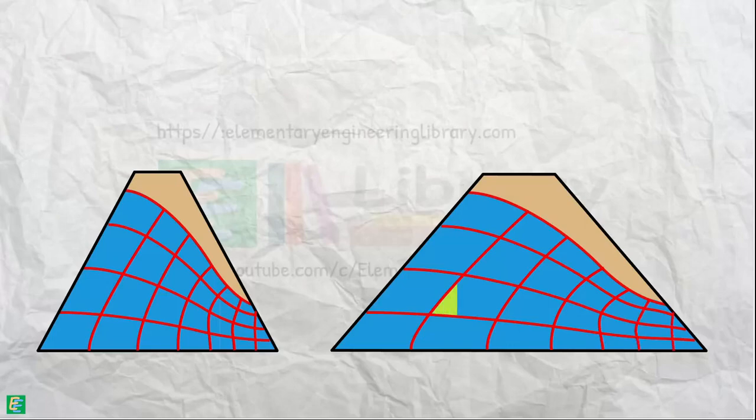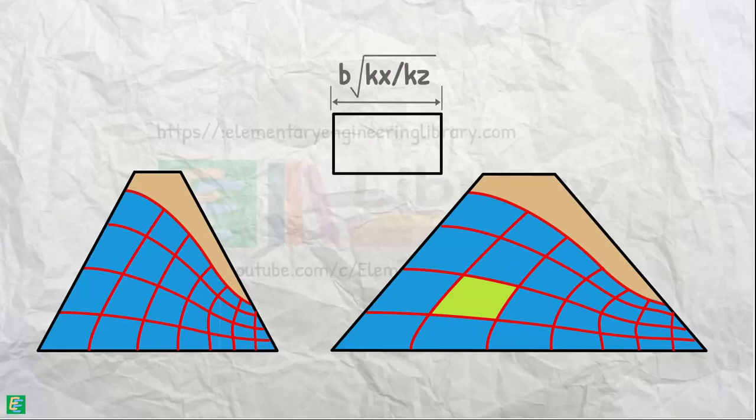On the natural cross-section, the flow net will not be composed of squares because the horizontal dimensions are elongated by the factor square root of kx by kz, nor will there be orthogonal intersections between the flow lines and the equipotential lines.